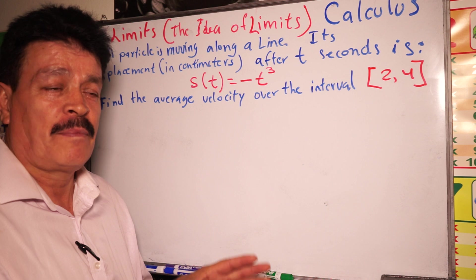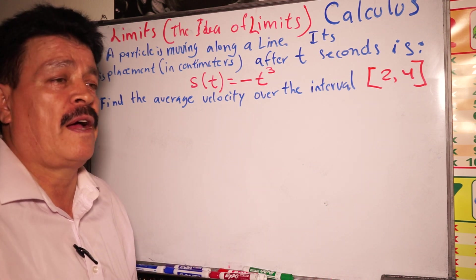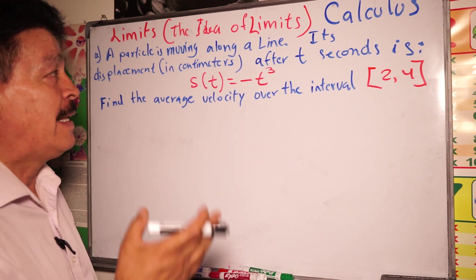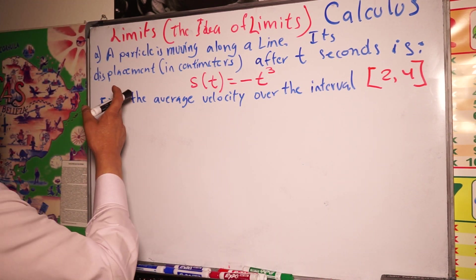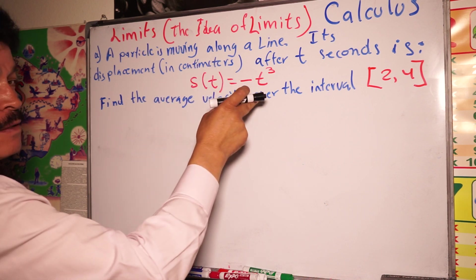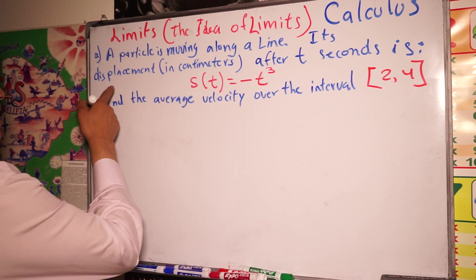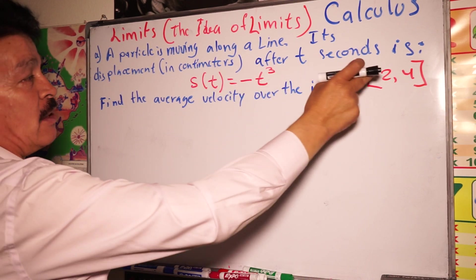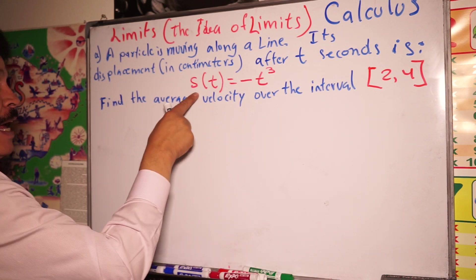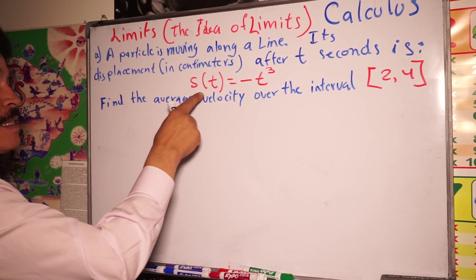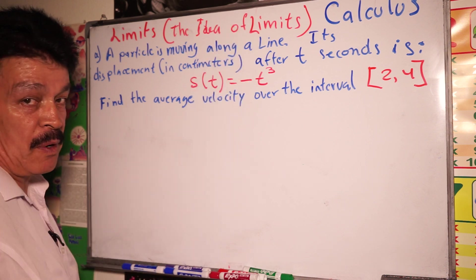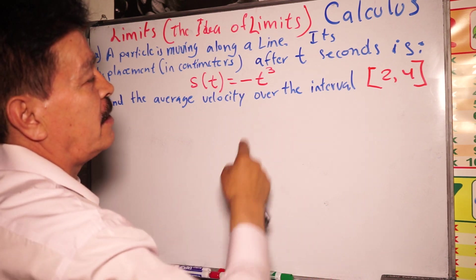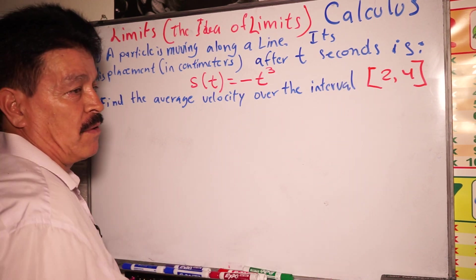Actually today is not a real problem for working as a limit, but we are going to get the idea of what I mean by limit. A particle is moving along a line. Its displacement in centimeters after t seconds is s(t) equals negative t to the third power. So find the average velocity over the interval two and four.